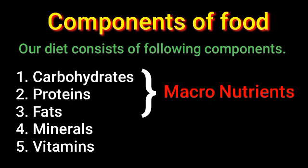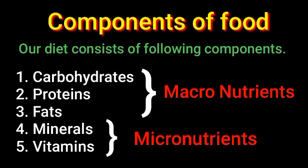Among these five components, carbohydrates, proteins, and fats are called macronutrients, while minerals and vitamins are called micronutrients. All these nutrients are essential for our body. Carbohydrates, proteins, and fats are required in large quantities, hence they are called macronutrients.